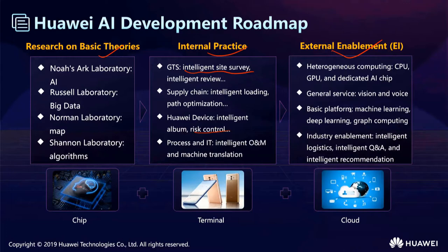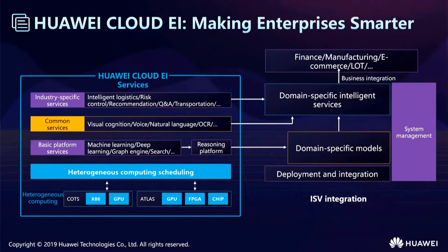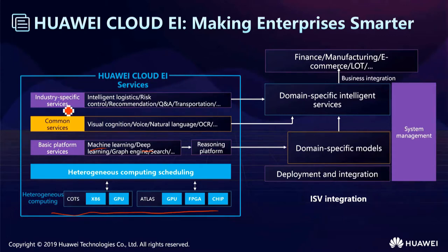Here is the basic architecture of Huawei Cloud AI. The bottom layer is the chips and systems, such as GPU and x86, which provide computing power to algorithms in the basic platforms such as machine learning and deep learning. These algorithms can be used in many fields — in industrial fields such as intelligent transportation and intelligent logistics, and in general fields such as image and voice processing. Therefore, Huawei's EI can provide many intelligent services, and Huawei provides full systems management and technical support.